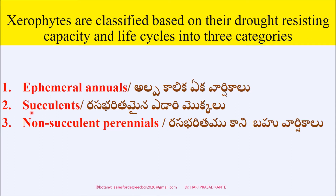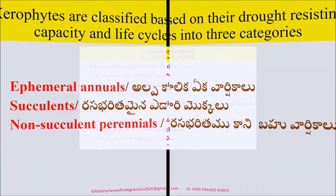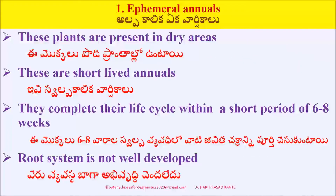The three categories are: first, ephemeral annuals; second, succulents or perennials; and third, non-succulent perennials. The first one is ephemeral annuals.